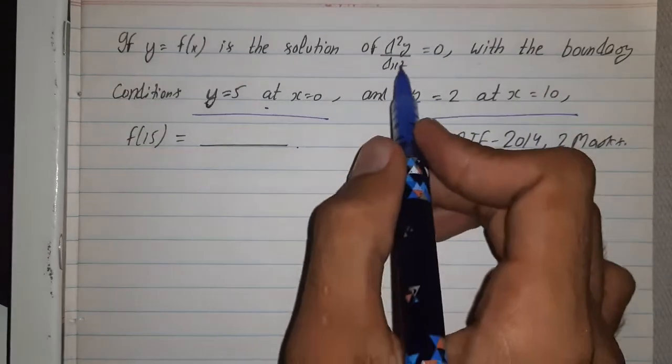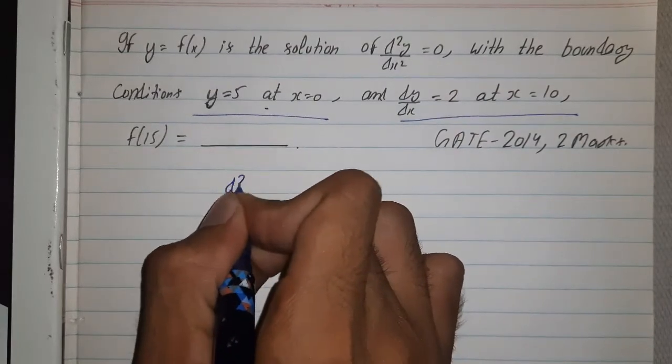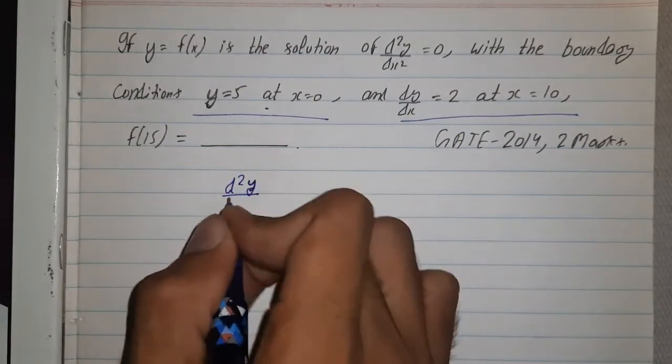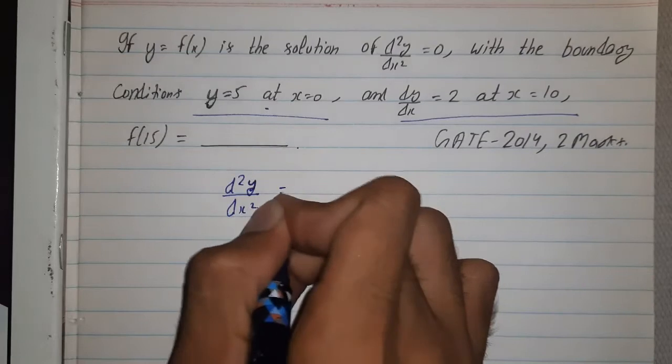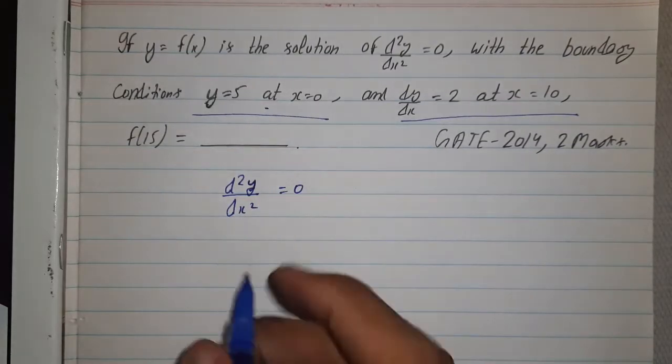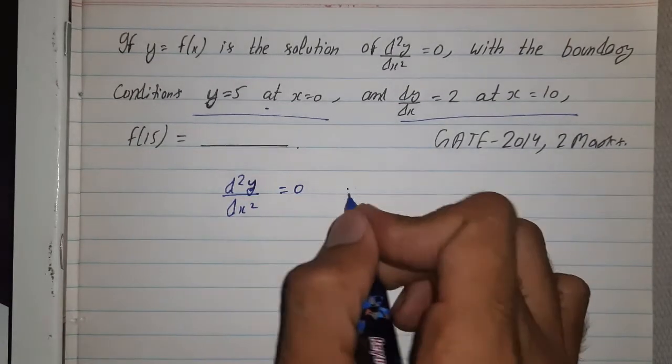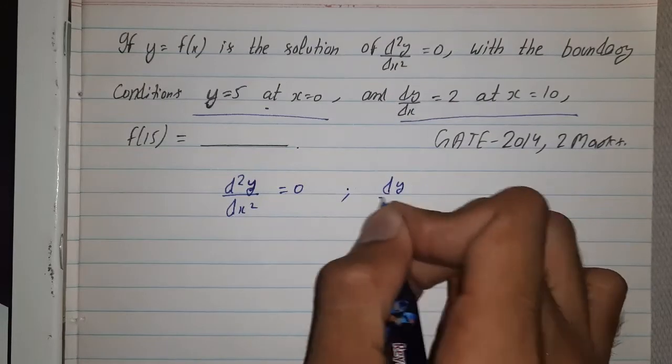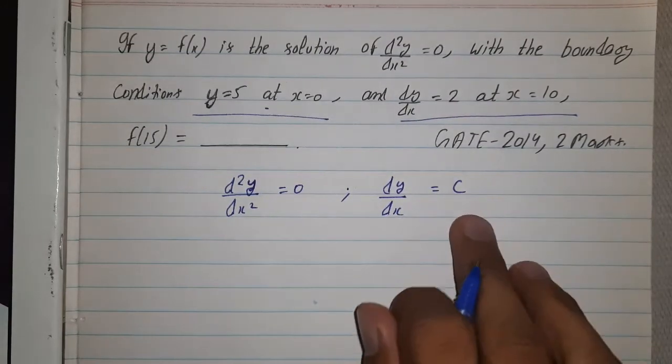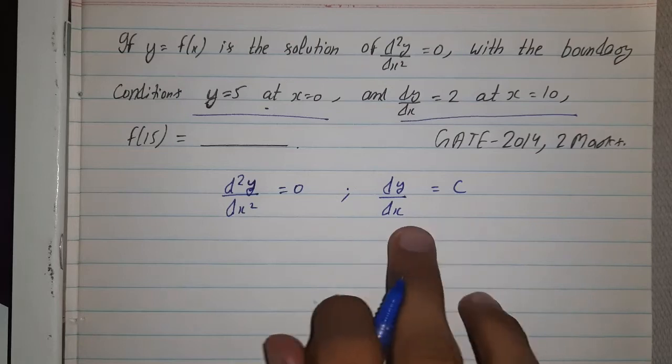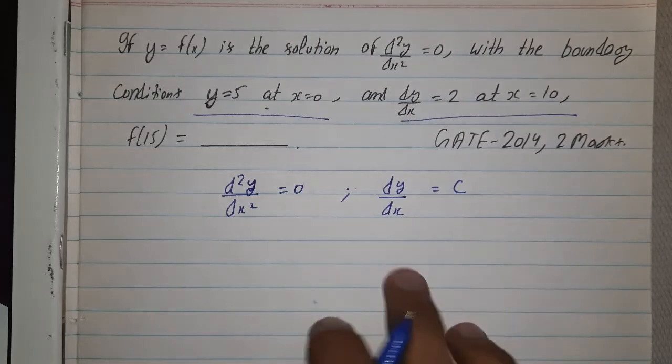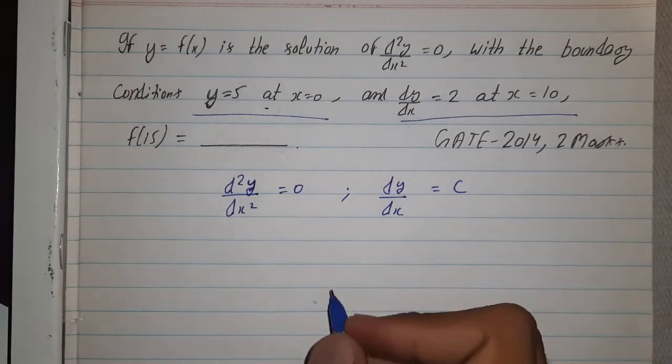So by concluding from d²y/dx² = 0, we can observe that if this is equal to 0 then dy/dx should be equal to any constant c. Then only its double differentiation is equal to 0. So dy/dx = c.